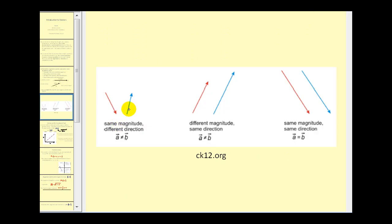These first two vectors, even though they have the same magnitude, are not pointing in the same direction, therefore they're not equal. The second pair are pointing in the same direction, but they have different magnitudes, so they're not equal. But these last pair are equal because they have the same magnitude and the same direction.